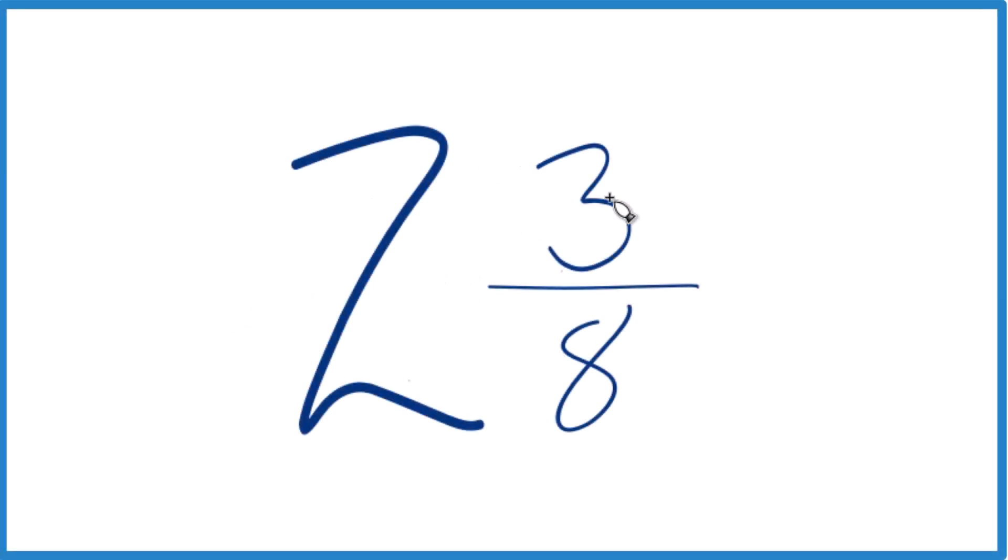So if you're given the mixed number 2 and 3 eighths, and you want to get that to an improper fraction, here's how you do it. You take the whole number, that's the 2, multiply it by 8.